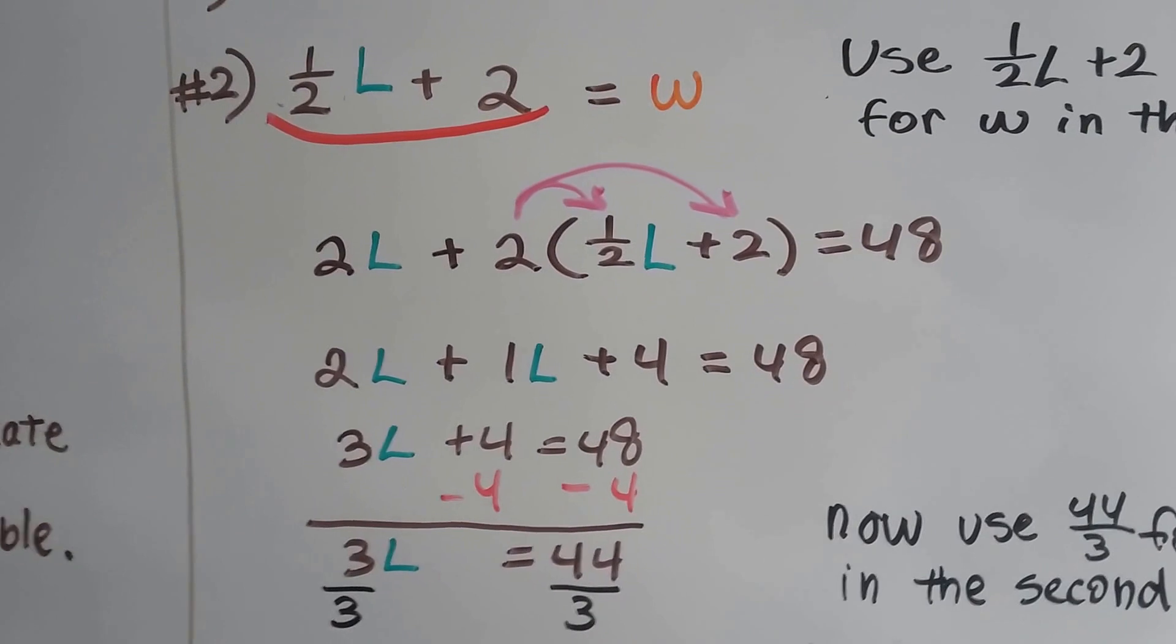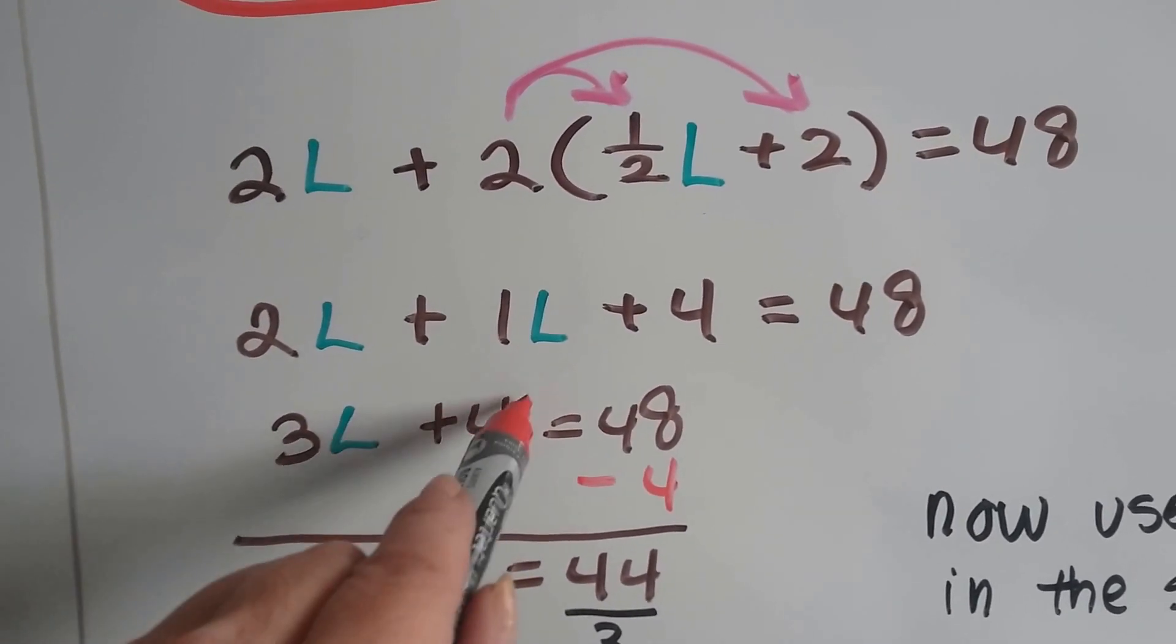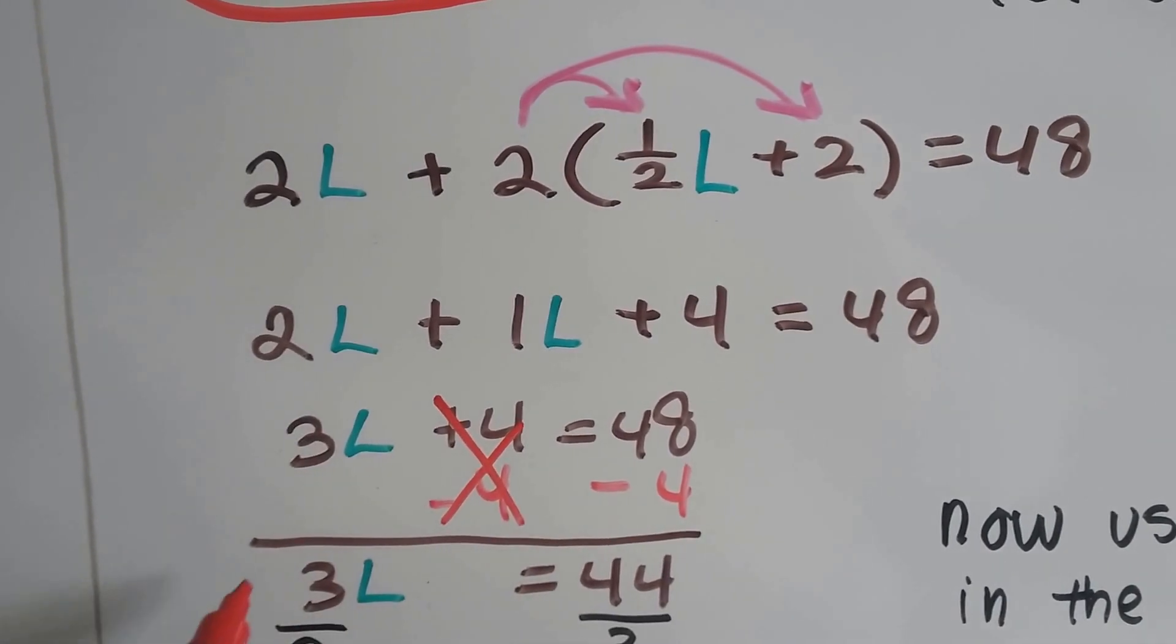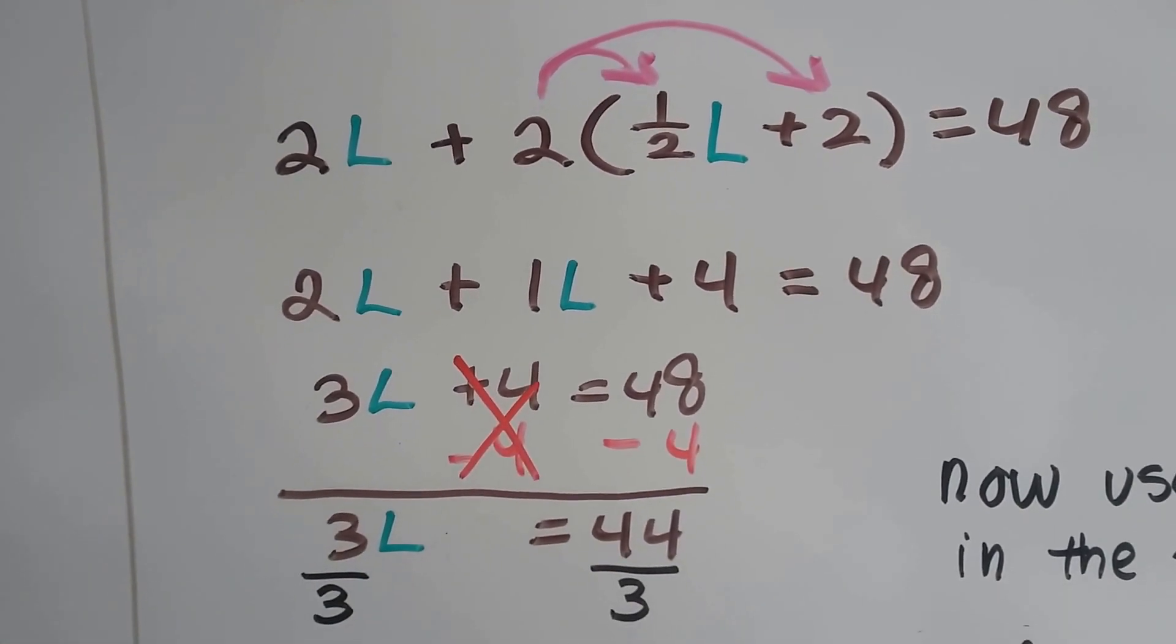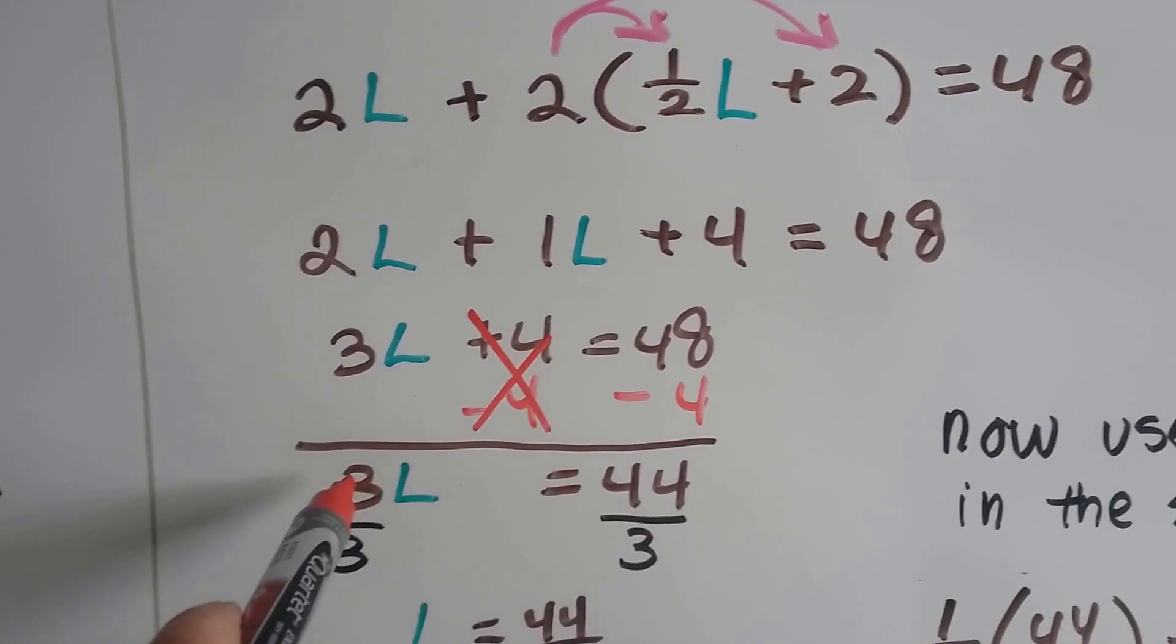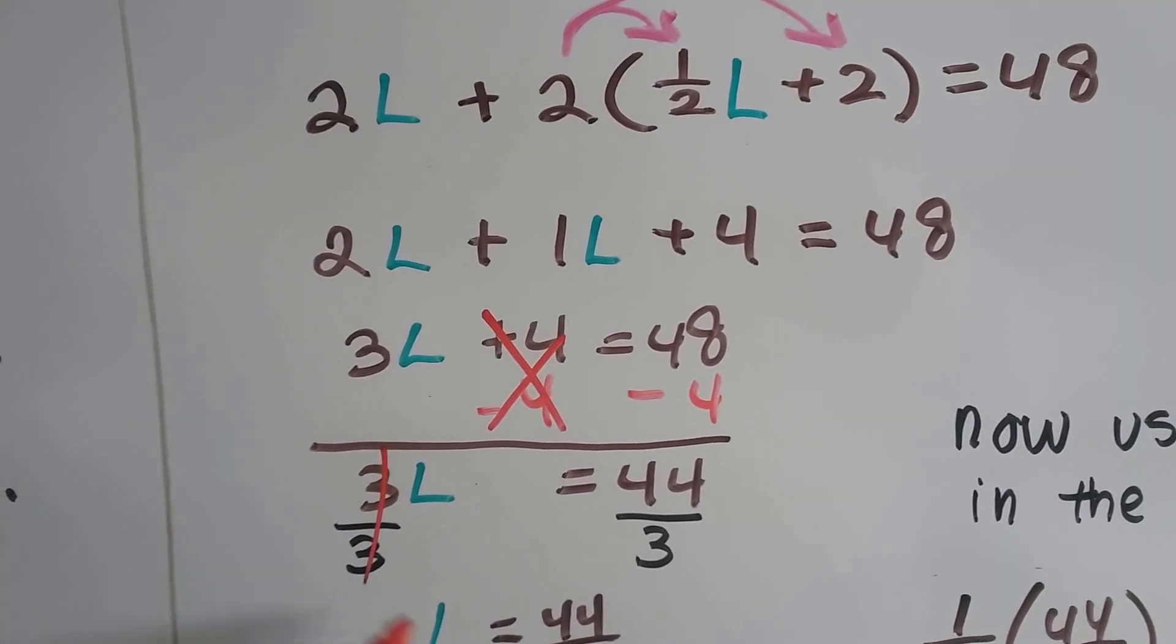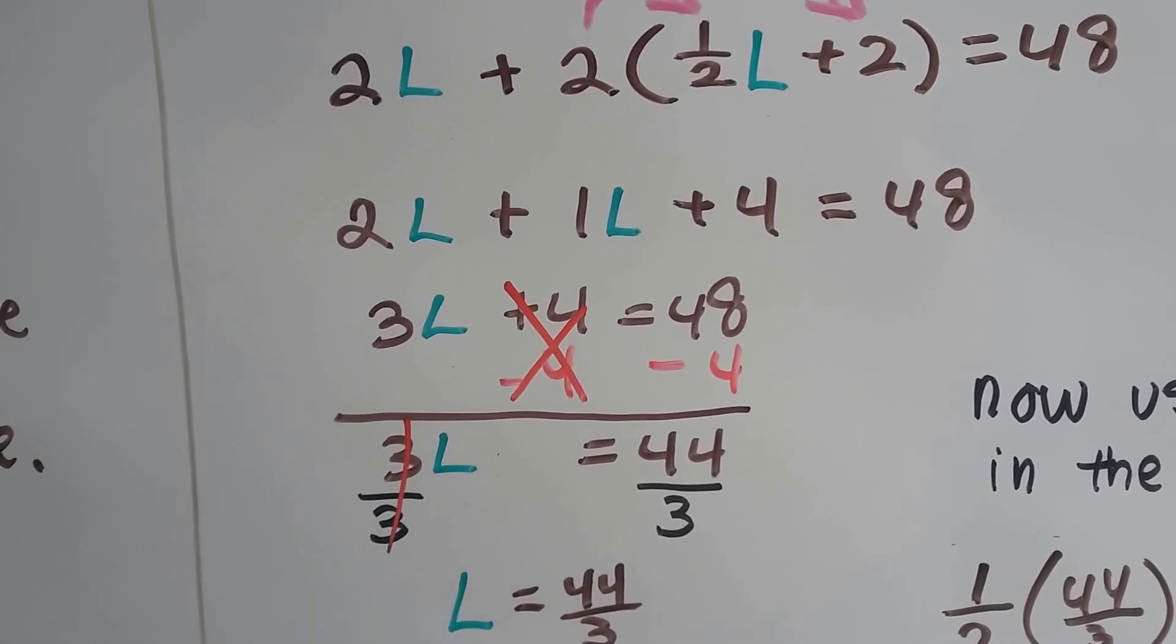Now we can use additive inverses and we can create a zero pair. We subtract 4 from each side and we get 3L is equal to 44. Now all we have to do is divide each side by this 3 coefficient and there's our buddy in the invisible one. We get 1L is equal to 44 over 3.